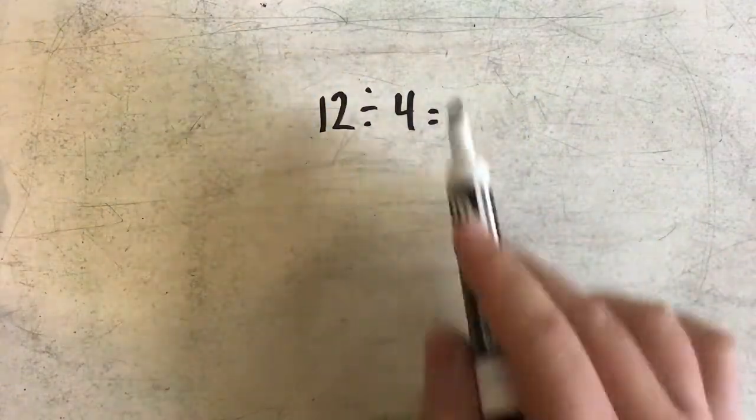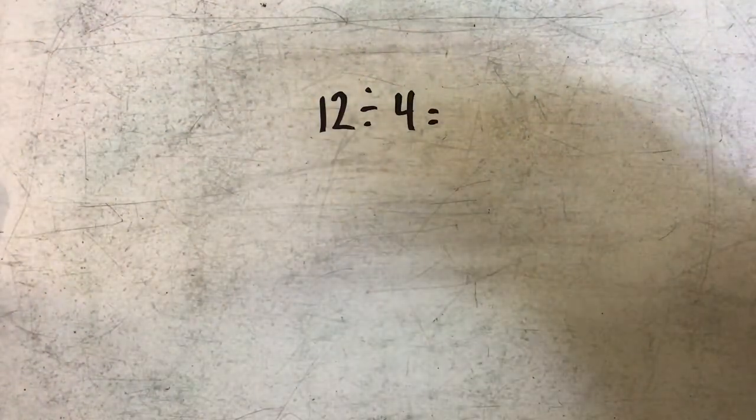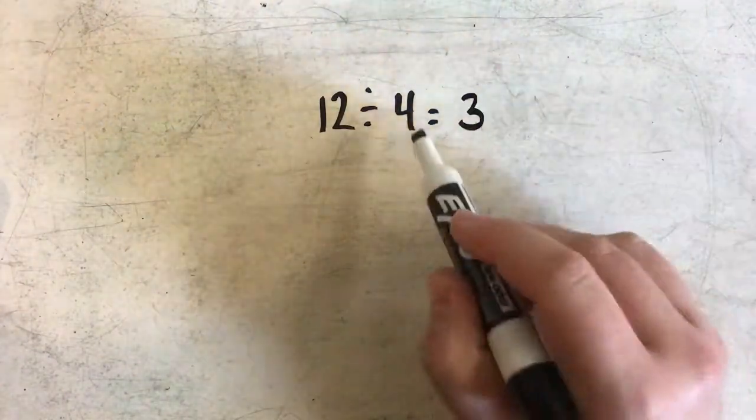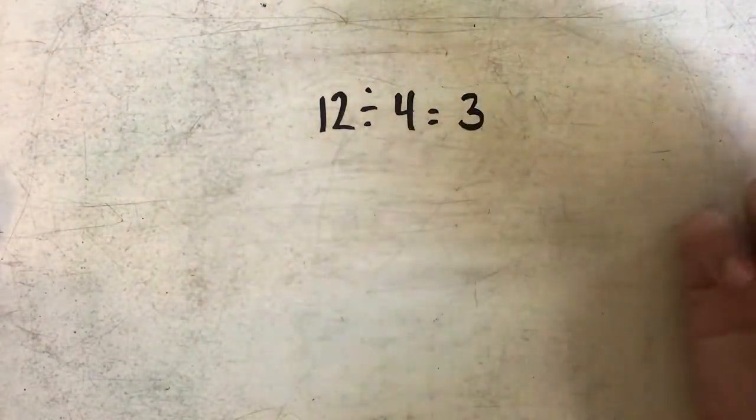We're going to start with this problem: 12 divided by 4. That is a basic fact. I know that 12 divided by 4 is 3 because 4 times 3 gives me 12.